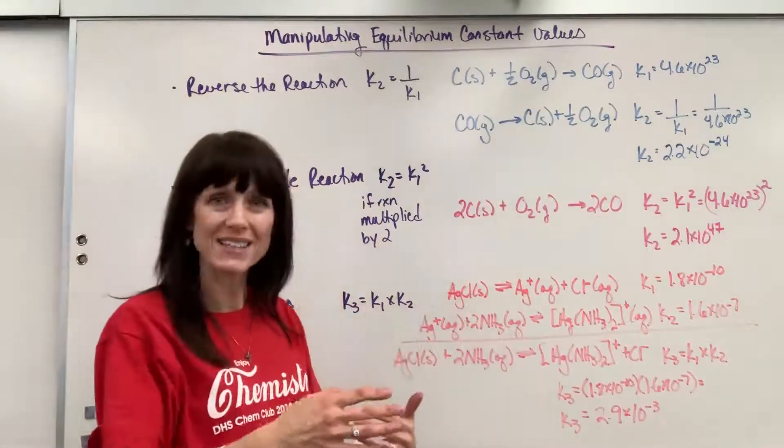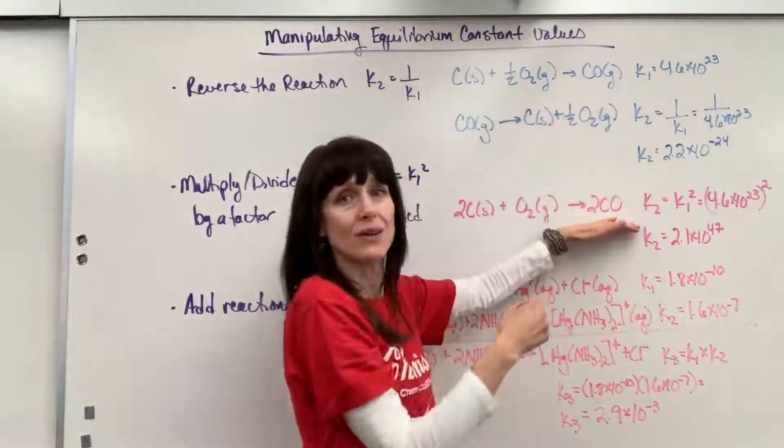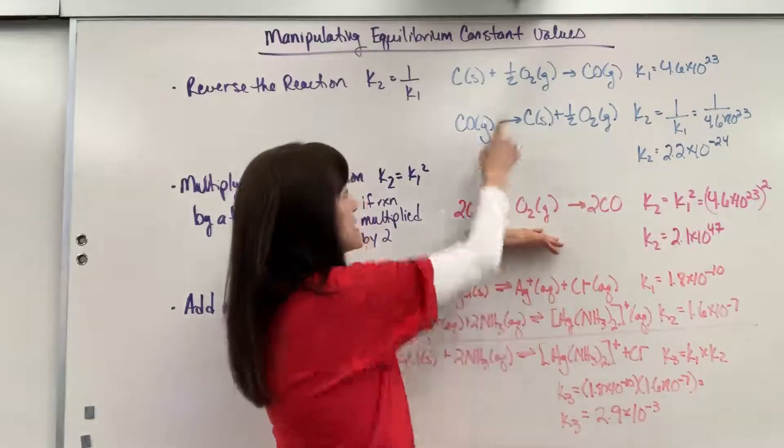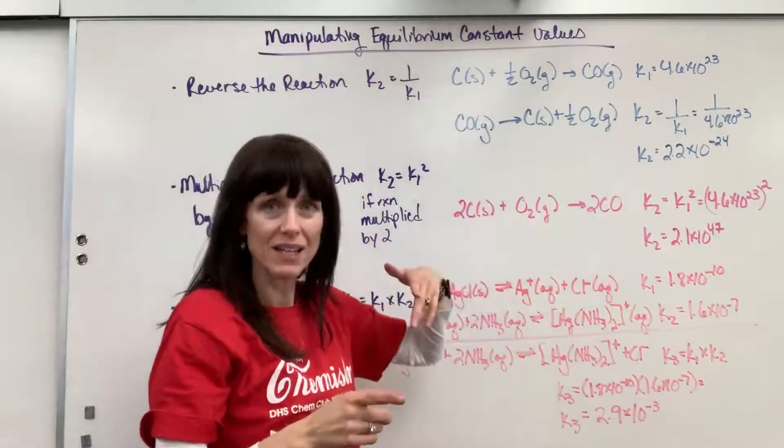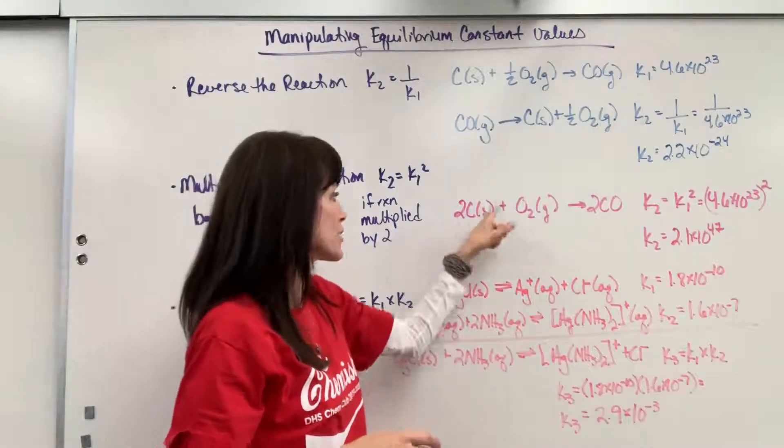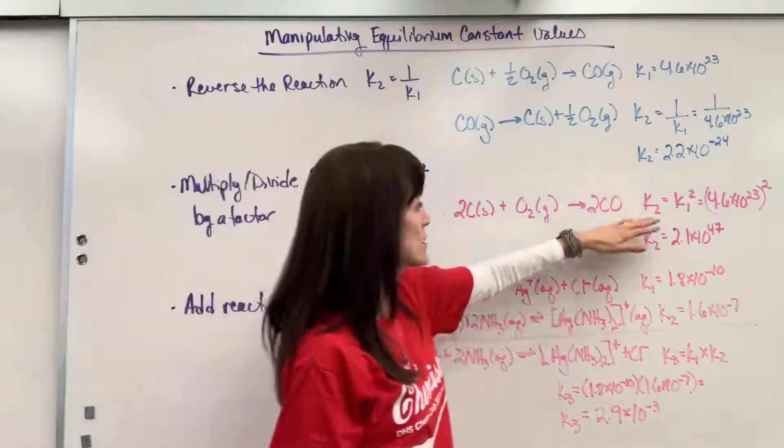Well, if we were to write the equilibrium expression, instead of having CO to the 1 power, CO squared, divided by instead of 1 half, or oxygen raised to the 1 half, it's now oxygen raised to the 1. Everything, because the coefficients all doubled, the exponents doubled.